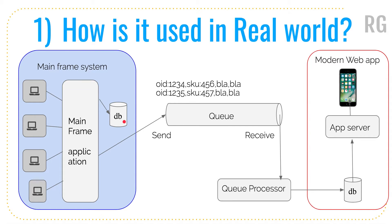Let's say there is a business requirement to generate a report from this data. As a modern software engineer, you would expose RESTful web services and let an app server interact with them to create a report. But for legacy mainframe systems located in different store locations, you cannot easily rebuild or maintain that application, especially as requirements keep changing. So what architects typically do is expose the data and send it to a messaging queue.